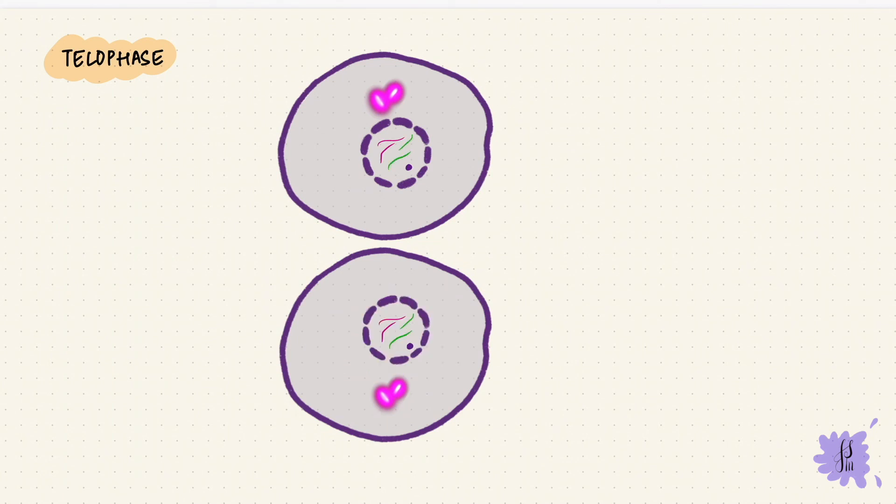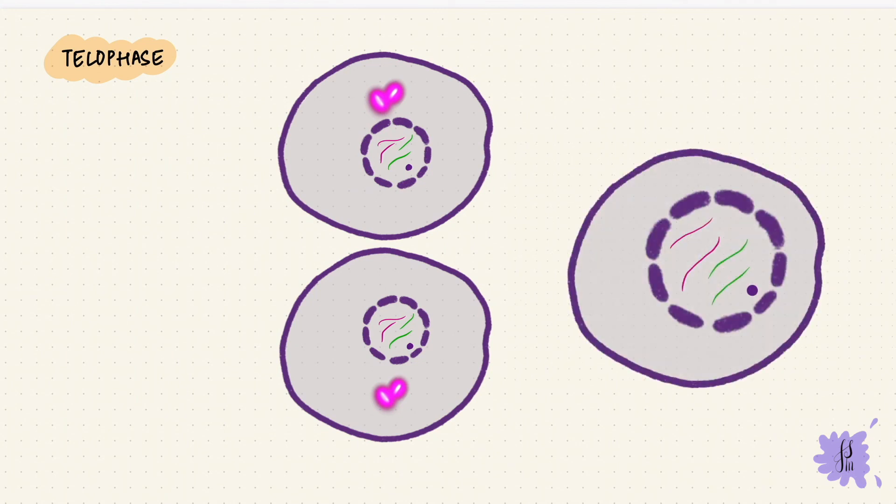So now we've got two cells each with the same number of chromosomes as the parent cell. 23 pairs means diploid. So one diploid cell divided into two diploid cells.